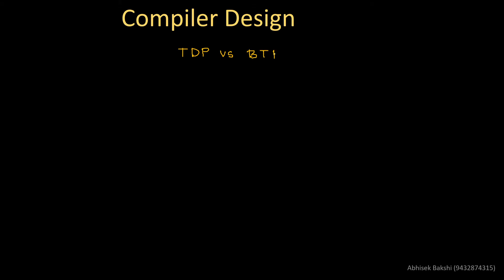Ultimately, the job of both of these parsers is to check whether the string is in the grammar or not. To parse means to find the set of production rules and the order in which they are required to generate a particular string from the grammar. Let's take an example to realize this particular difference.